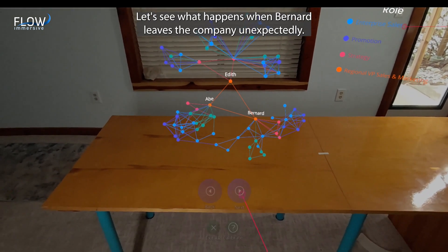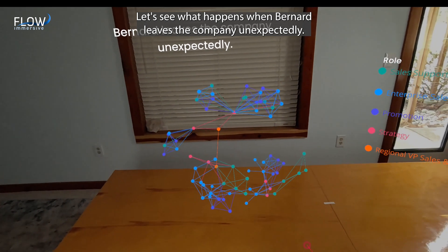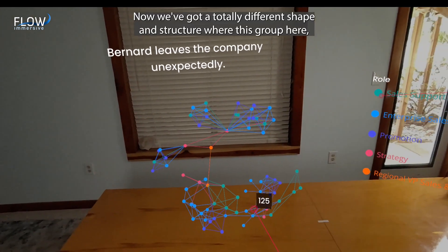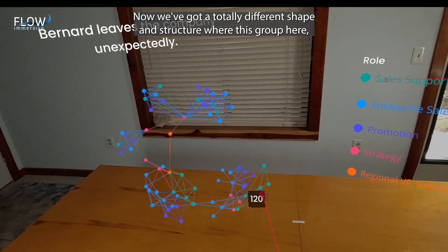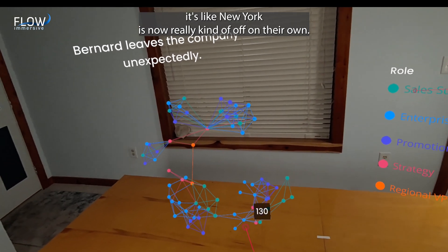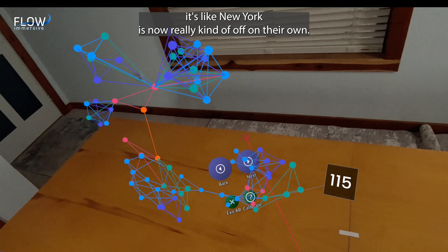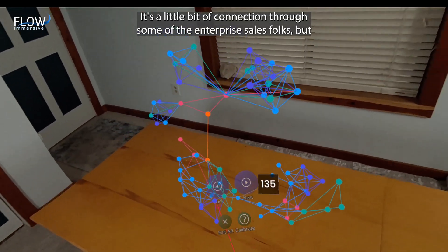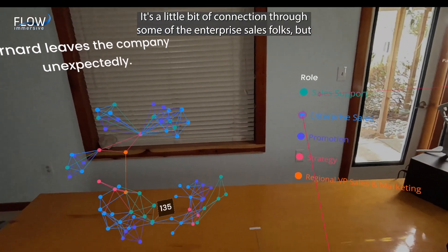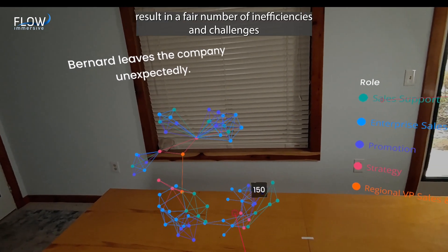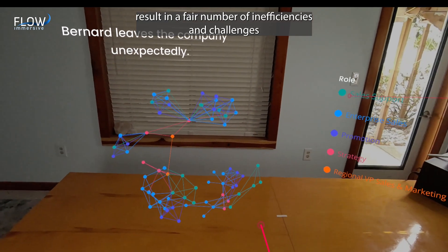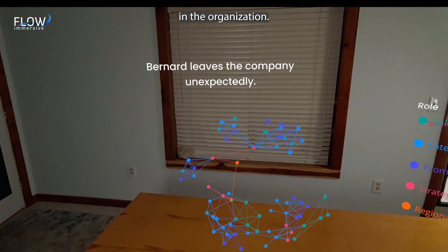Let's see what happens when Bernard leaves the company unexpectedly. Now we've got a totally different shape and structure where this group here, New York, is now really kind of off on their own. So a little bit of connection through some of the enterprise sales folks, but that could result in a fair number of inefficiencies and challenges in the organization.